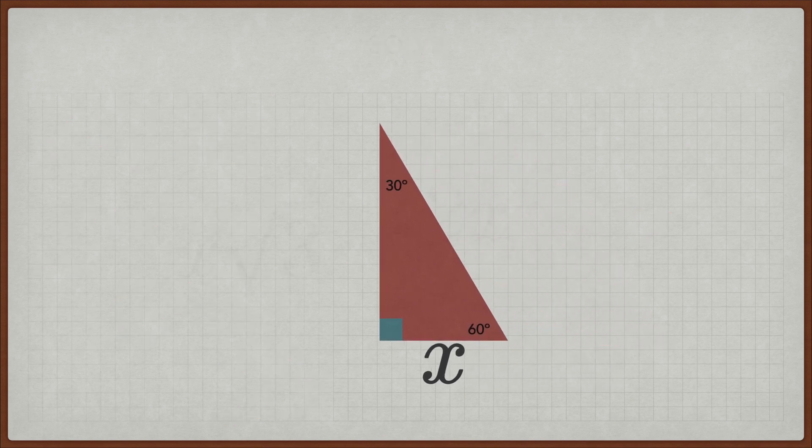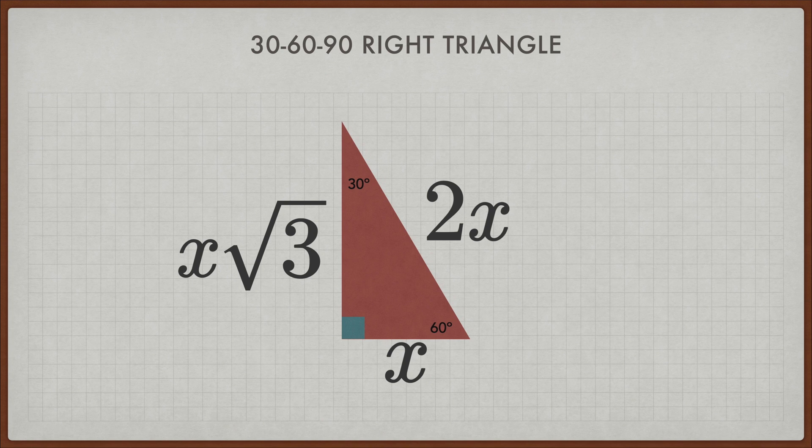So here it is, the 30-60-90 right triangle pattern. Short leg is x. Long leg is x times the square root of 3. Hypotenuse is 2 times x. Literally, I can put any number.